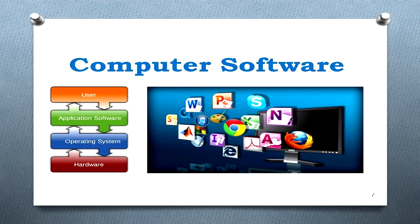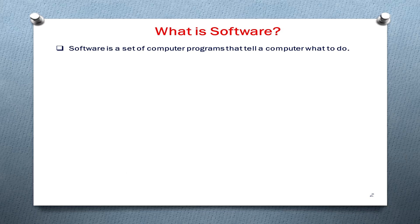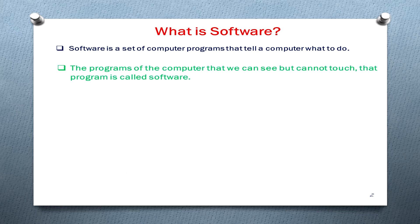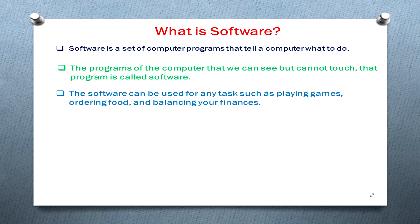Today's topic is: what is computer software? Software is a set of computer programs that tell a computer what to do. It means a computer program that tells a computer what to do — the programs of the computer that you can see but cannot touch are called software.